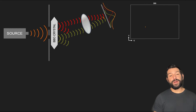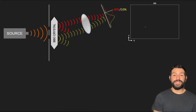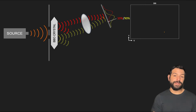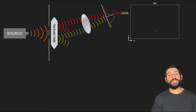If the particle was measured towards the left side of the screen, it is more likely it came from the top slit. If it is seen towards the right, it probably came from the bottom slit. If it is localized right in the middle, then it's equally likely it came from the top slit or the bottom slit.